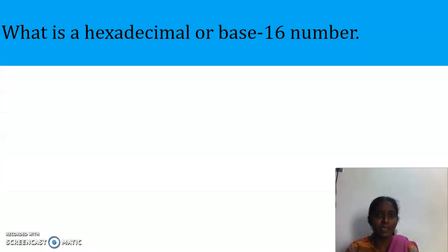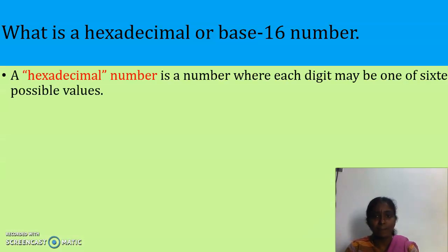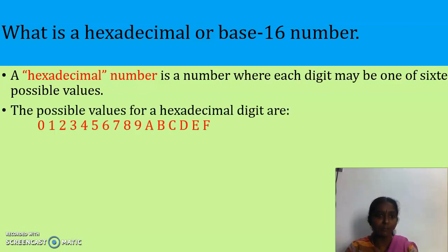What is hexadecimal, or base 16 number? The other name of hexadecimal is base 16 number. A hexadecimal number is a number where each digit may be one of 16 possible values. The 16 possible values are the numbers from 0 to 9 and the letters from A to F.